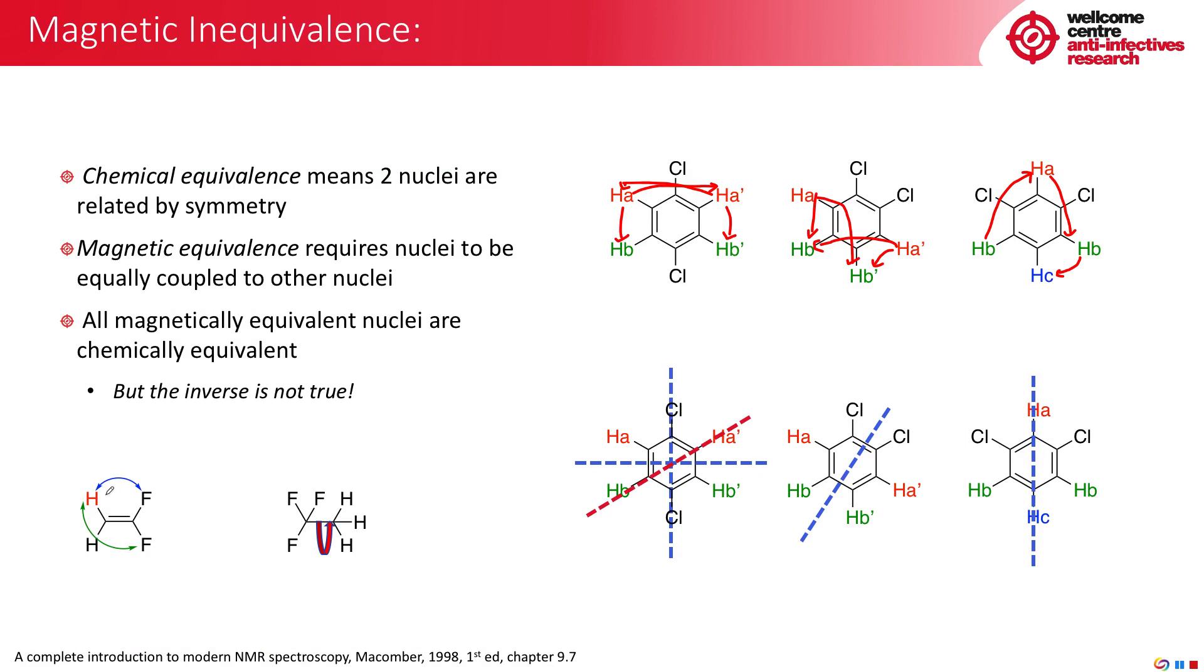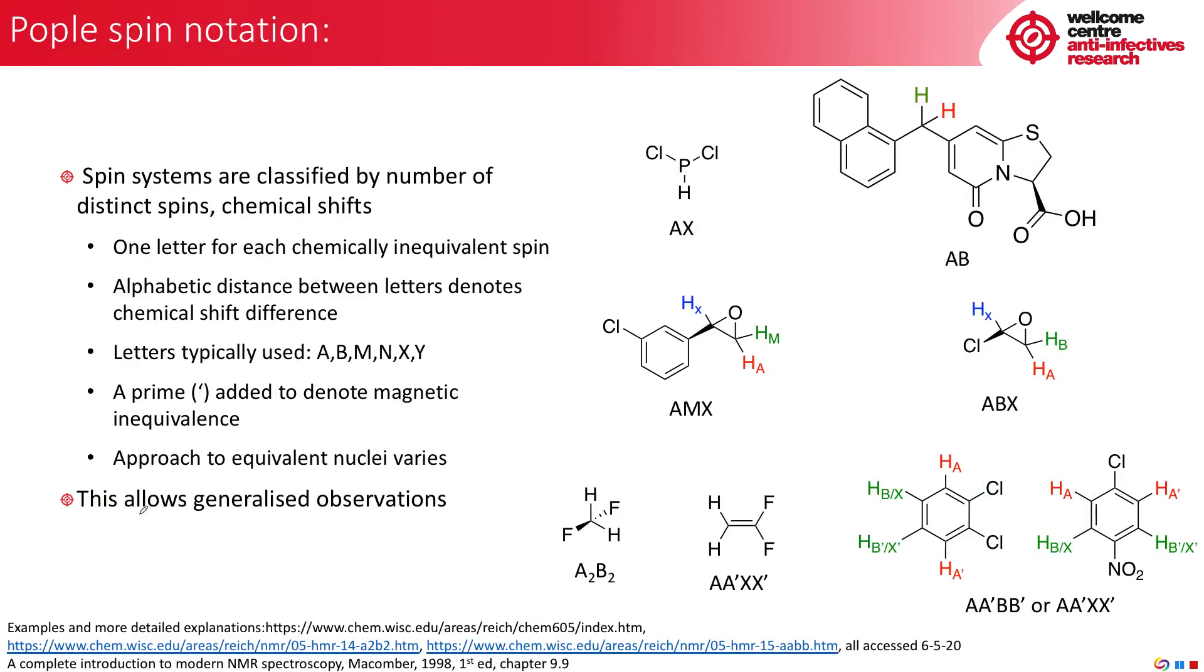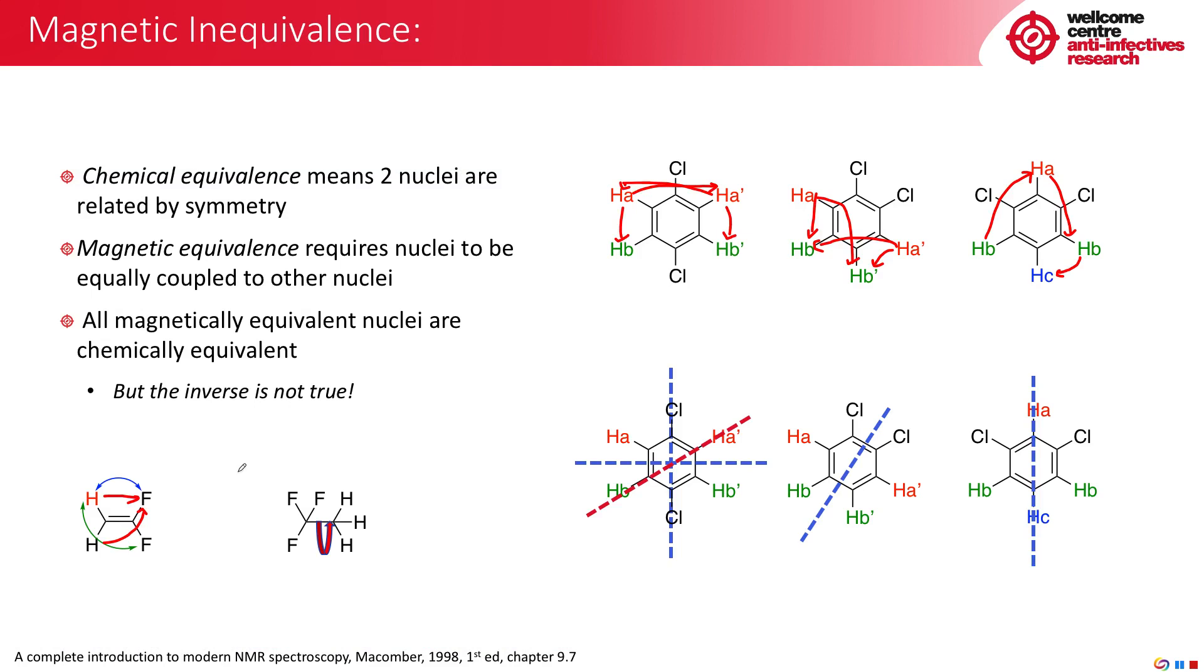You can see here, this is difluoroethylene. And you'd think at first glance that these two protons are equivalent. Chemically they are. However, each has a different coupling relationship to each of the two fluorines. So this is not the same as that. And these protons are therefore magnetically inequivalent. If we instead take trifluoroethylene, in this case the rotation around this bond is sufficiently quick that the relationship of each proton to each fluorine averages out to be the same over the course of an NMR experiment. So in fact, these protons are magnetically equivalent.